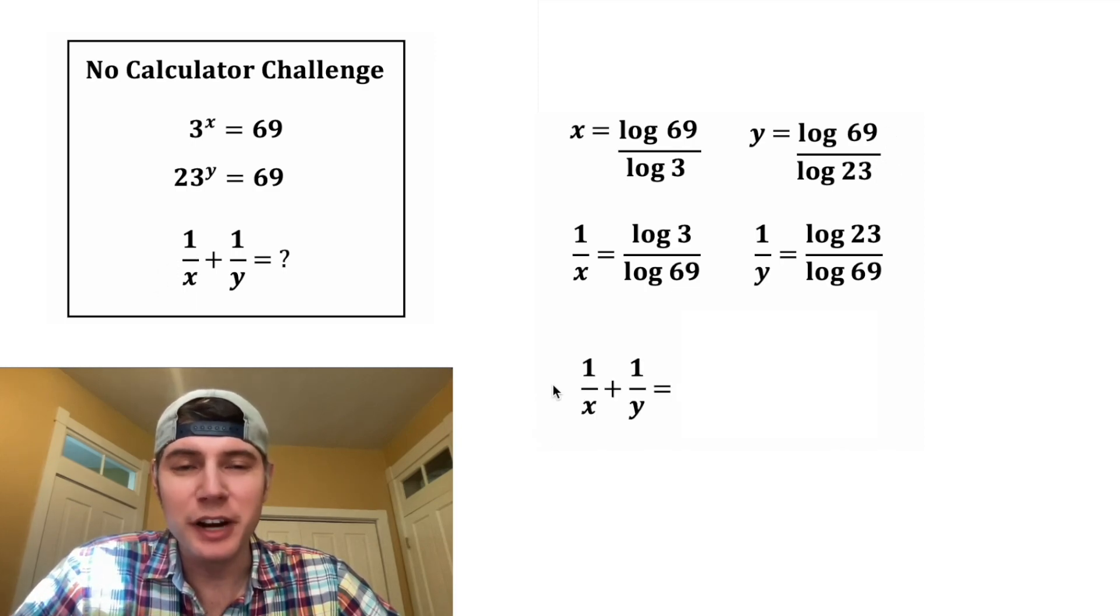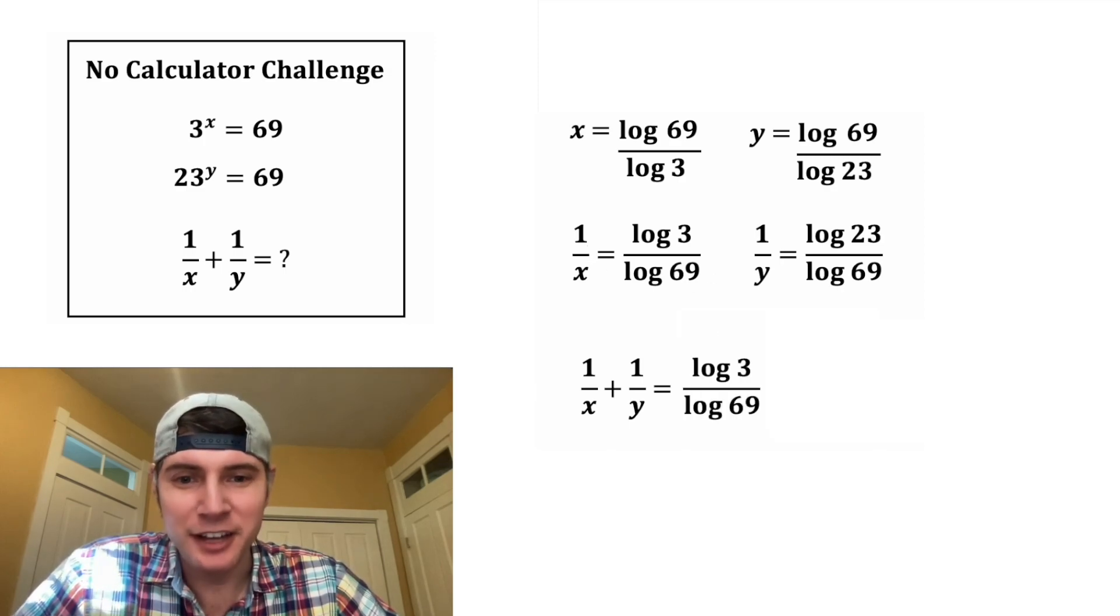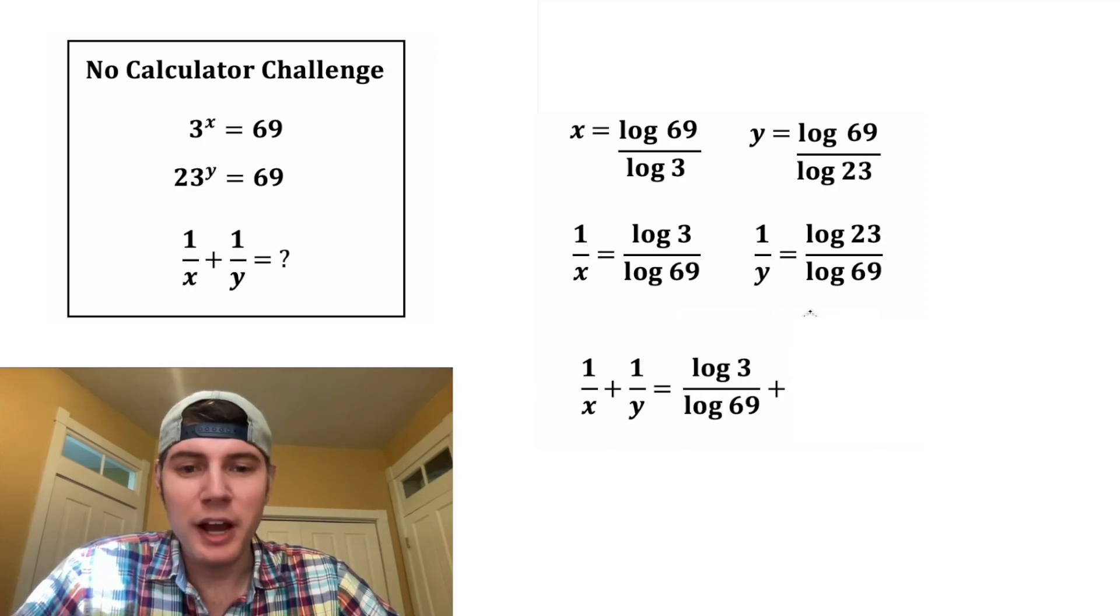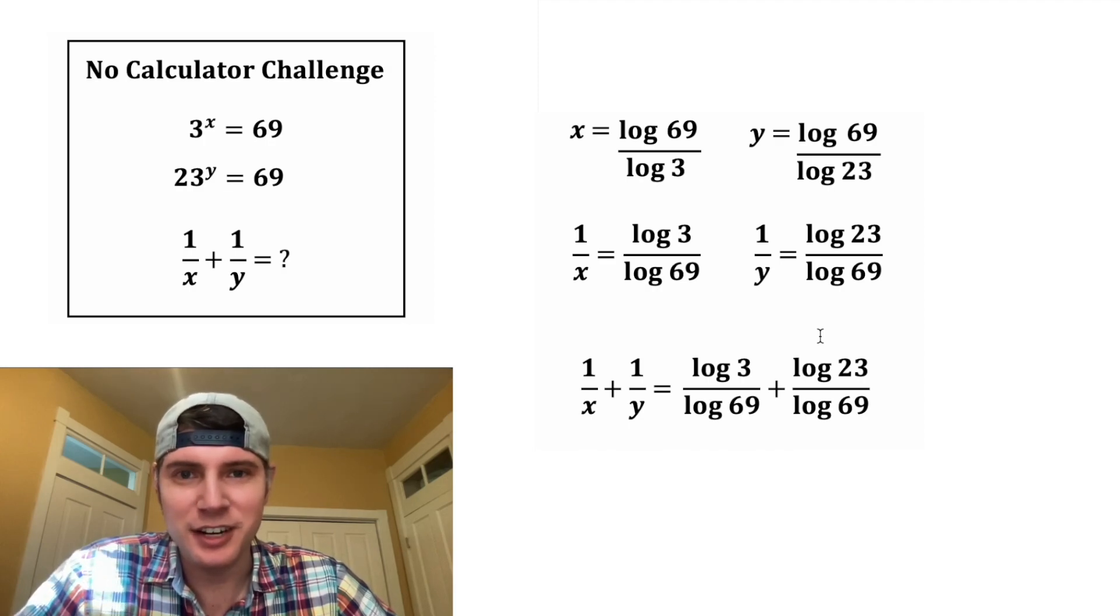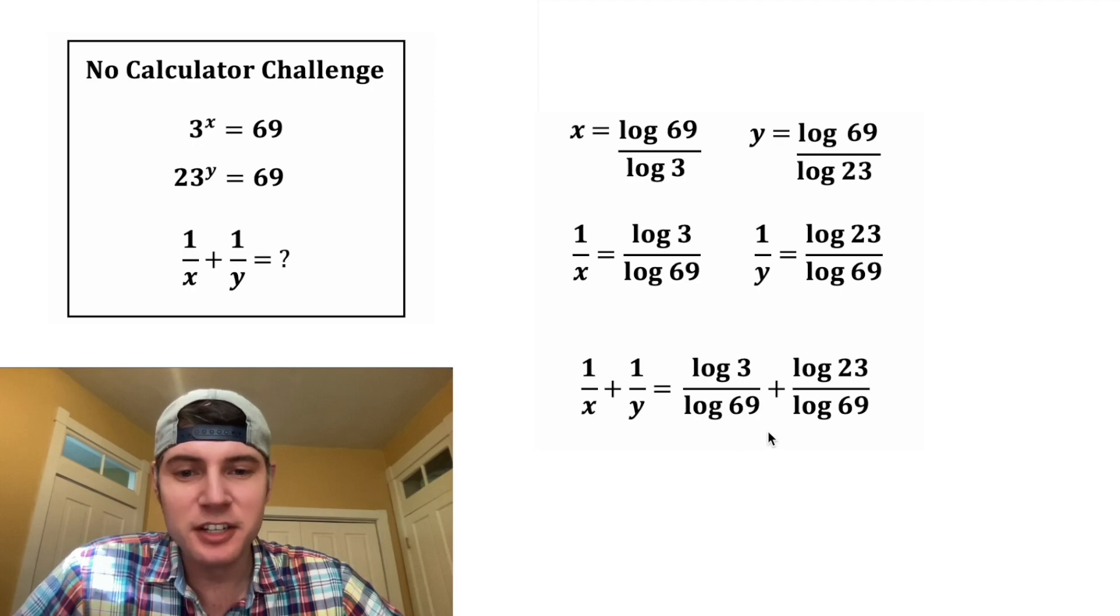So now let's evaluate 1 over x plus 1 over y. 1 over x is this log 3 over log 69 plus, and then 1 over y is going to be log 23 over log 69. So now we have a rational expression. We're adding these together. Since the denominators match, we can write it as a single fraction.